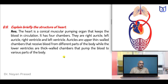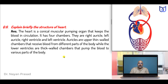Explain briefly the structure of the heart. The heart is a conical muscular pumping organ that keeps the blood in circulation. It has four chambers: right auricle, left auricle, right ventricle, and left ventricle. Auricles are upper thin-walled chambers that receive blood from different parts of the body, while the lower ventricles are thick-walled chambers that pump the blood to various parts of the body.